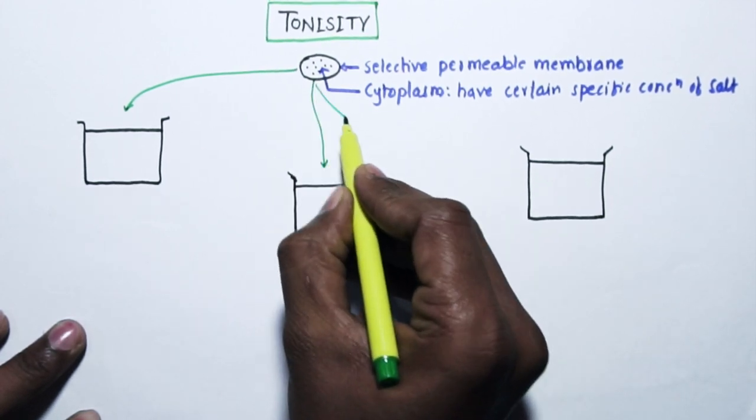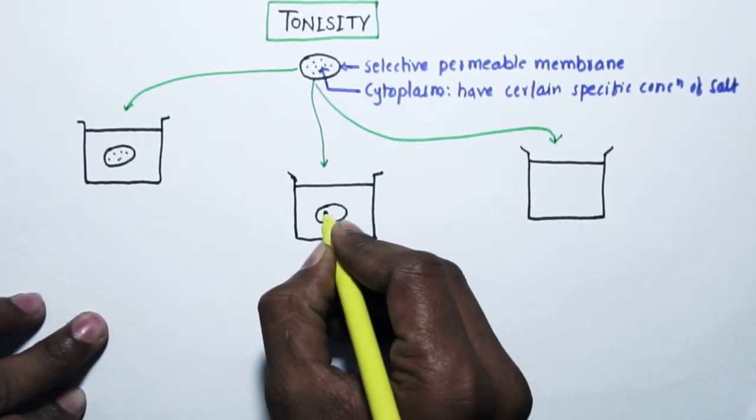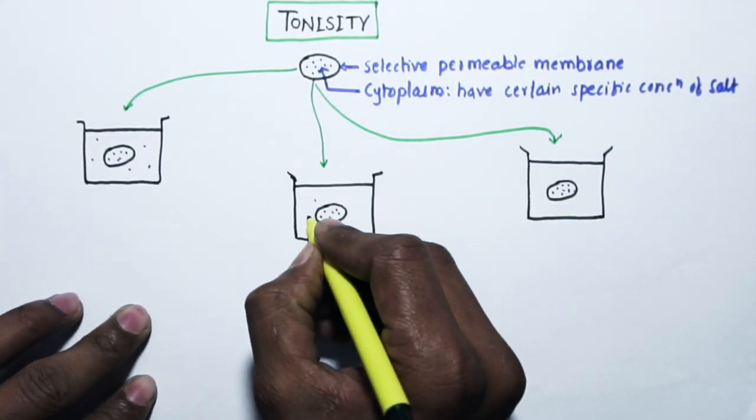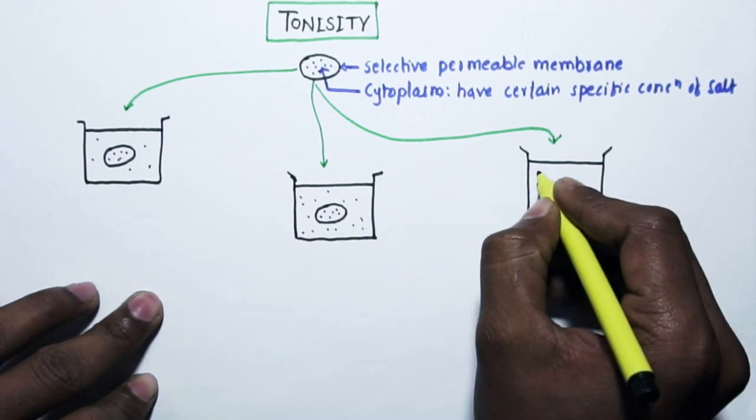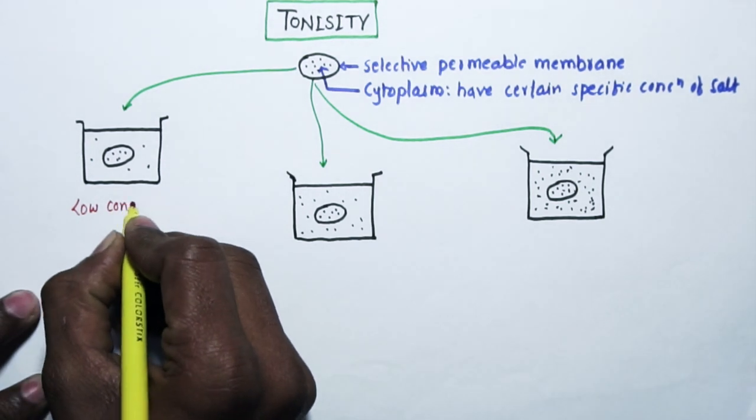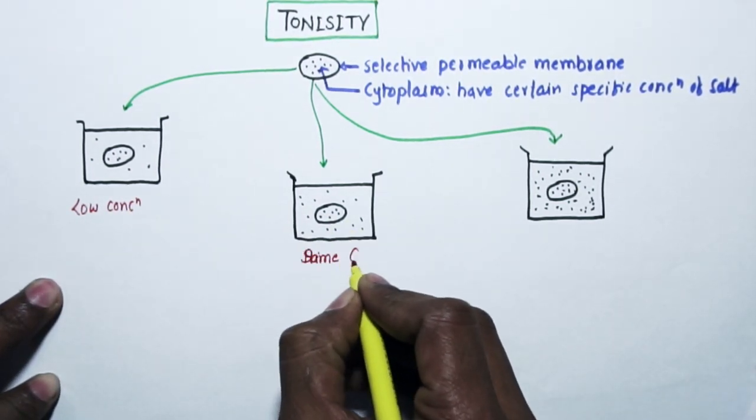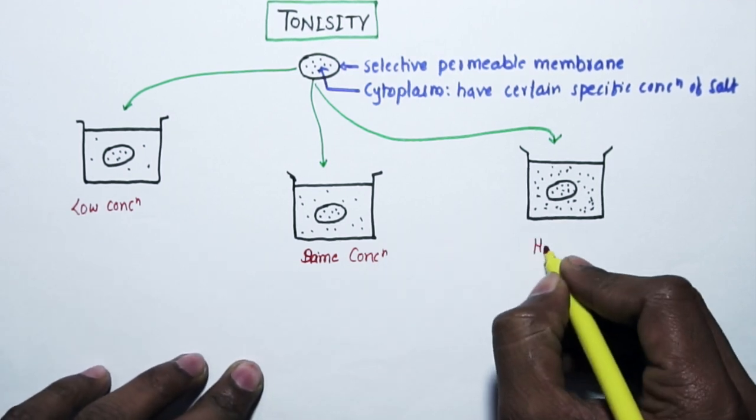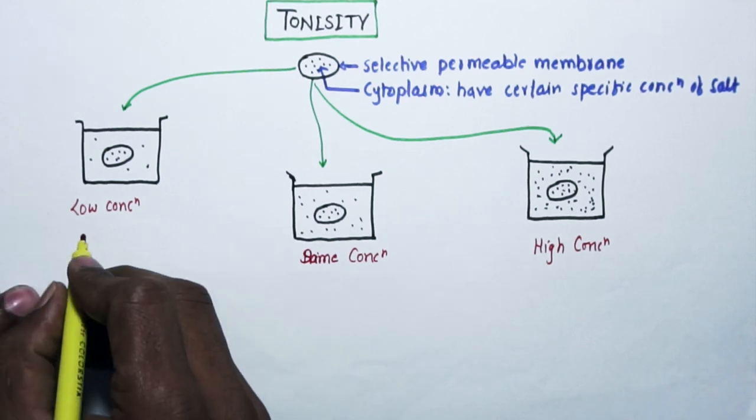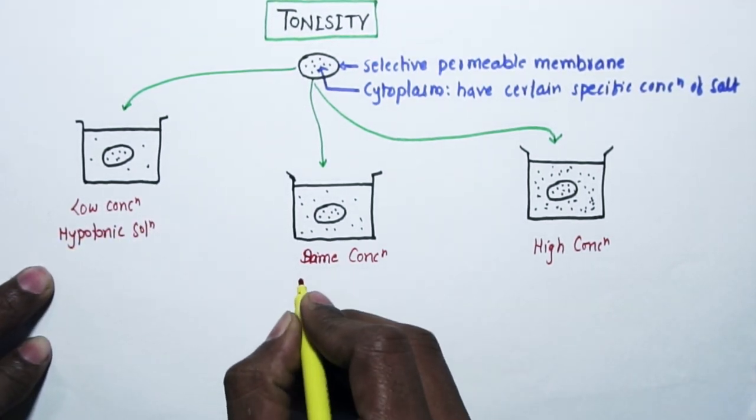Now we will analyze what will happen to the cell. In the first beaker, salt concentration is low compared to that of cytoplasm. In the second beaker, salt concentration is same as that of cytoplasm. In the third beaker, the salt concentration is more than that of cytoplasm.